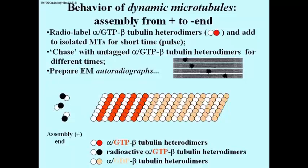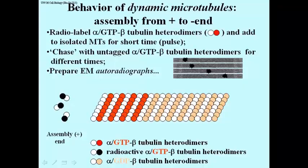Here we have an experiment in which the alpha-beta tubulins were made radioactive — indicated by the black and white balls — to represent radioactive alpha-GTP bound beta-tubulin heterodimers. In this partially formed microtubule, you see the alpha-GTP beta-tubulin heterodimers that are already there and therefore not radioactive. Behind them you see the alpha-GDP subunit bound to beta to make the heterodimer, which has been part of the microtubule for a period of time.